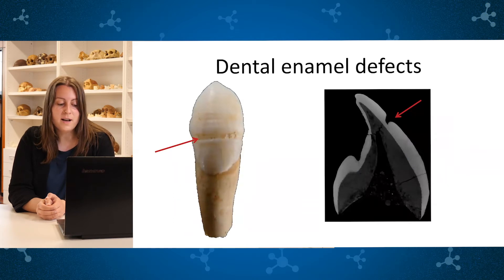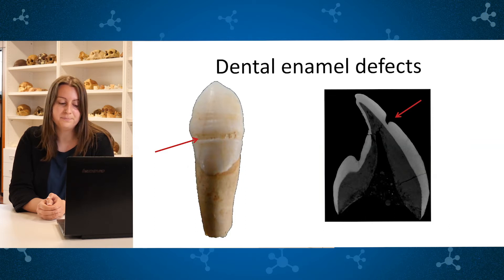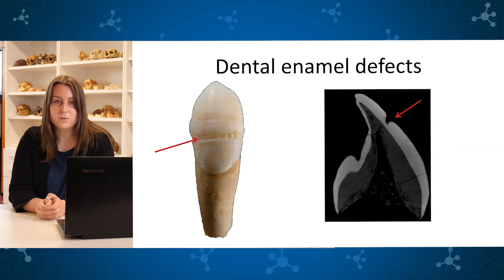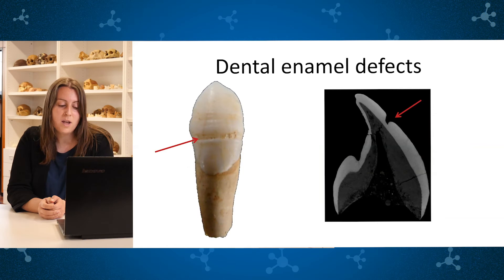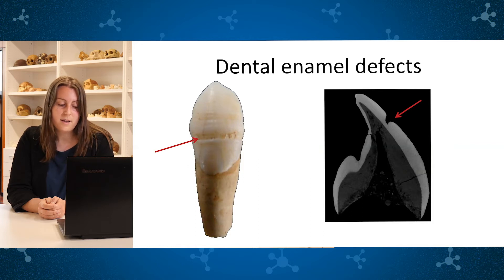The methodology explained so far has been developed for specific populations and has not been tested in archaeological populations, which have an added problem: the presence of high rates of hypoplasia. Hypoplasia is defined as a reduction of enamel due to a period of stress suffered by the individual during tooth formation. In this presentation, we will test this methodology for sex estimation through canine dental tissue in a medieval population that has a high frequency of hypoplasia, to check if this condition affects sex estimation.